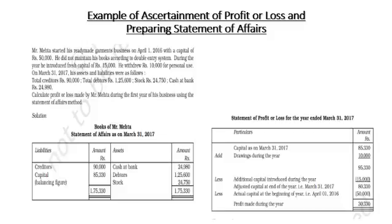He withdrew 10,000 for personal use — this is called drawings. The closing period is 31st March 2017, so a financial year is being used here. The assets and liabilities given are related to 31st March 2017, meaning you have to prepare the closing statement of affairs. With the help of all these, you calculate the statement of profit made during the year by Mr. Maitha — using the statement of affairs method, also called the net worth method or single-entry system.